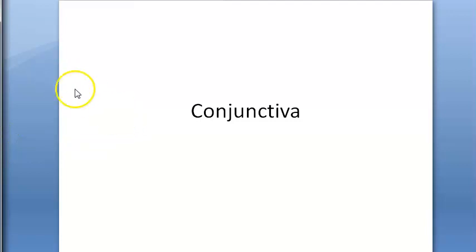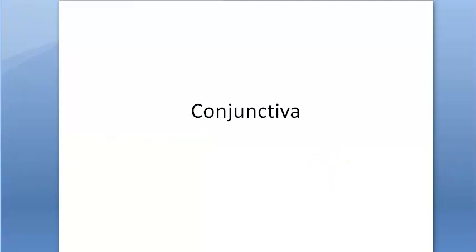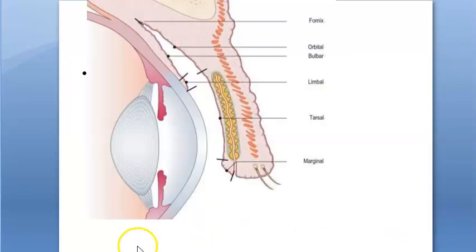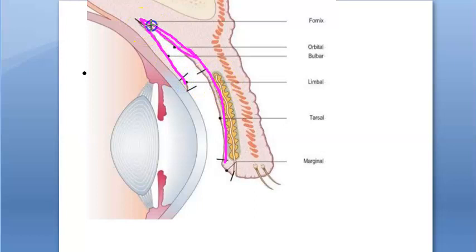In the last video we started off with the anatomy of conjunctiva. We saw the definition: conjunctiva is a translucent mucous membrane which lines the posterior surface of the eyelids and the anterior surface of the eyeball. So there are two parts — the lining of the eyelid and the anterior lining of the eyeball. In between these two you have the fornices, which connect the palpebral conjunctiva with the bulbar conjunctiva.